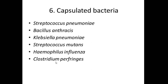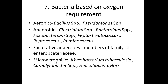The next topic is capsulated bacteria. The capsule is the outermost gelatinous layer secreted by bacteria that helps them evade phagocytic cells. The presence of a capsule makes a bacterium more virulent. Examples of capsulated bacteria are Streptococcus pneumoniae, Bacillus anthracis, Klebsiella pneumoniae, Streptococcus mutans, Haemophilus influenzae, and Clostridium species.